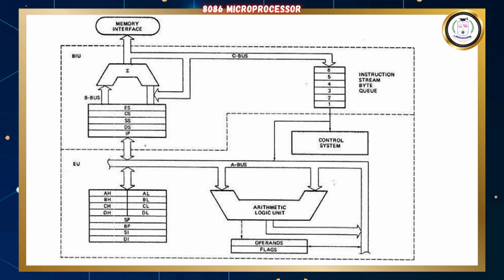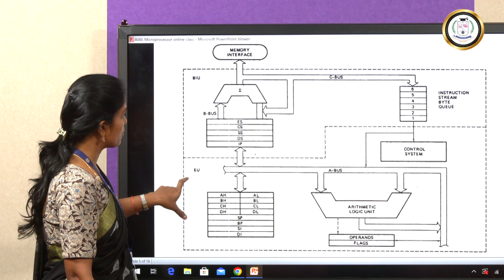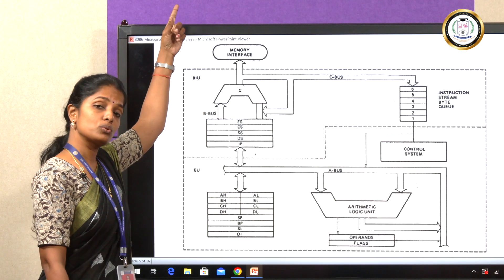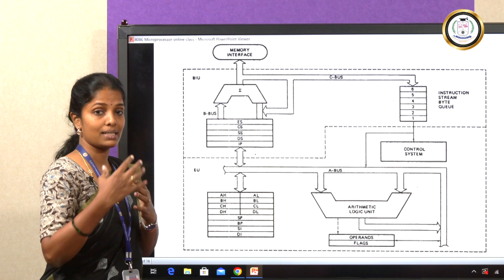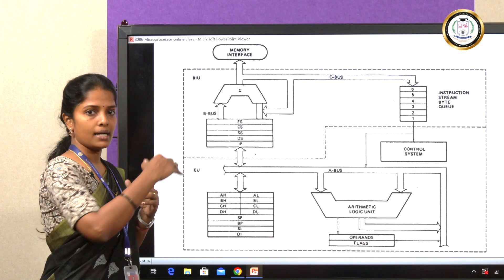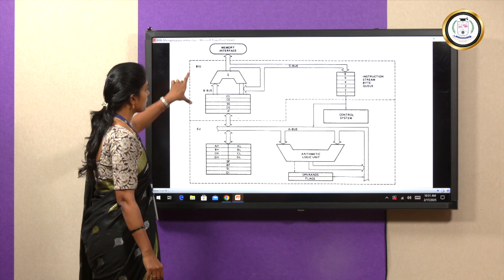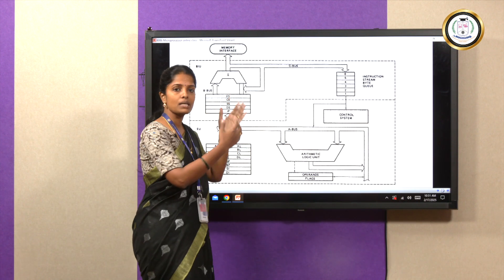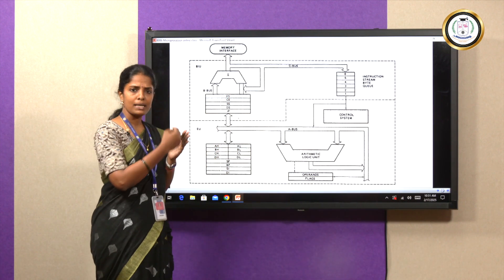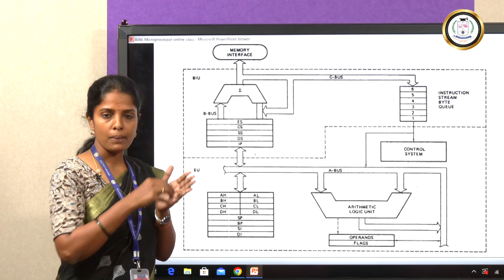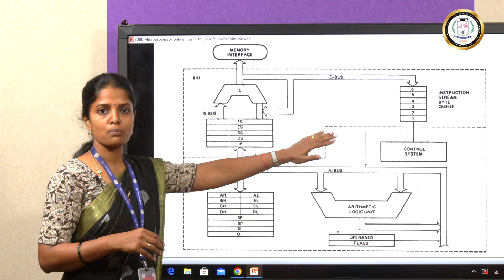This is the overall view of the 8086 microprocessor. The bus interface unit and the execution unit are shown here. Outside the architecture, the memory interface can connect up to a maximum of 1 MB of memory. The bus interface unit has a pipelined architecture. What is meant by pipelined architecture? In the 8086 microprocessor, we can fetch six instruction bytes in advance with the help of the six-byte instruction queue.